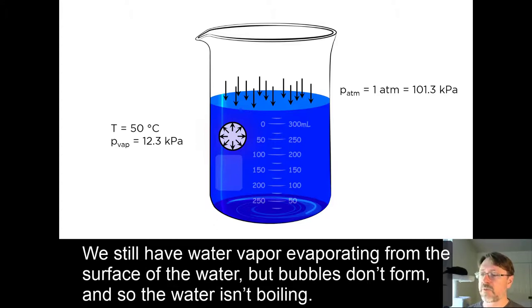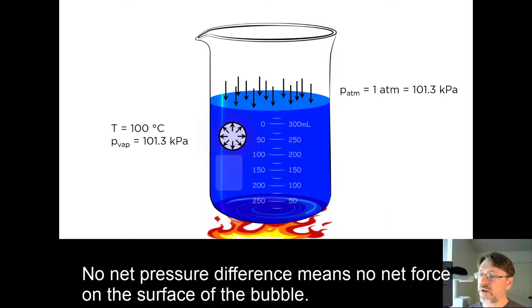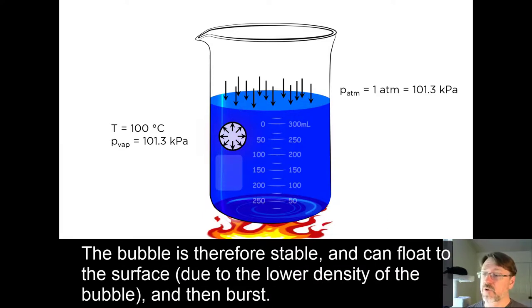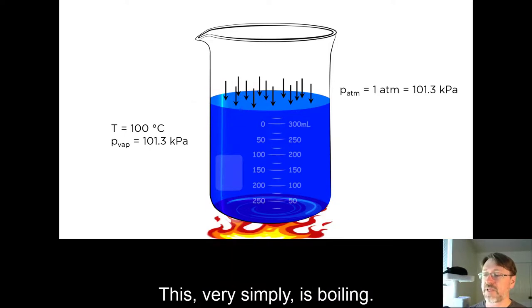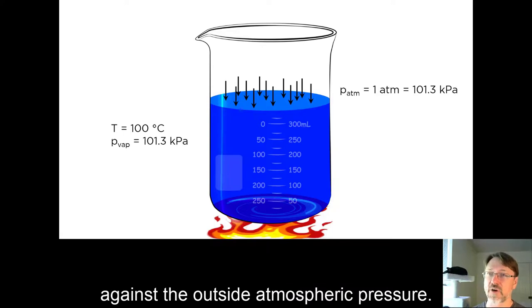We still have water vapor evaporating from the surface of the water, but bubbles don't form, and so the water isn't boiling. Now let's raise the temperature. Now the bubble that forms has the same internal pressure as the outside atmosphere. No net pressure difference means no net force on the surface of the bubble. The bubble is therefore stable and can float to the surface due to the lower density of the bubble, and then burst. This, very simply, is boiling. The boiling point is the temperature at which the vapor pressure of the liquid is sufficient to support bubbles against the outside atmospheric pressure.